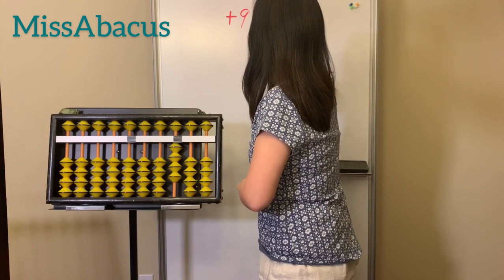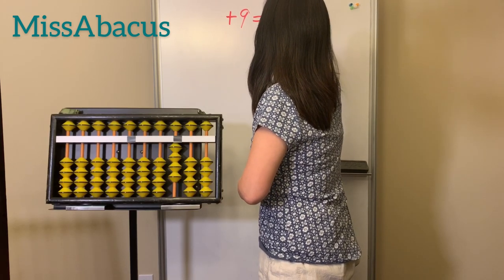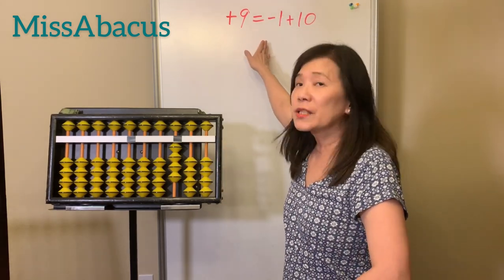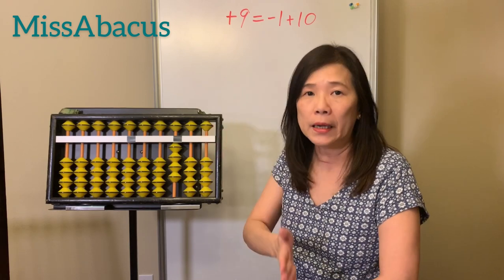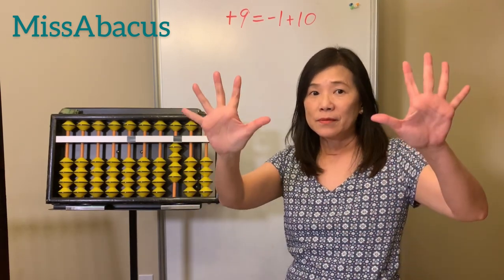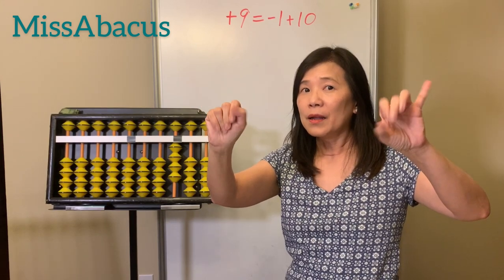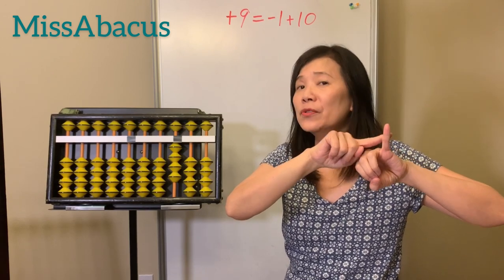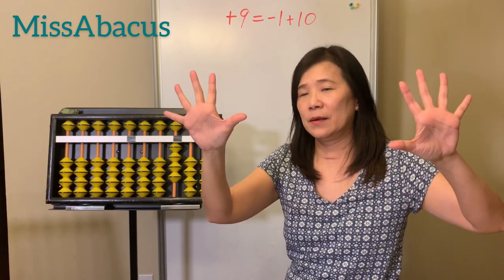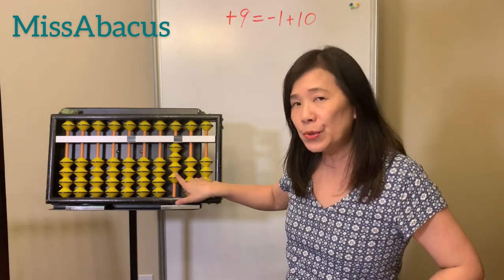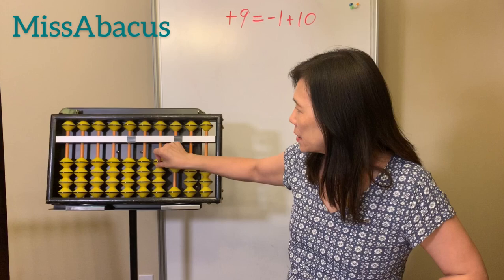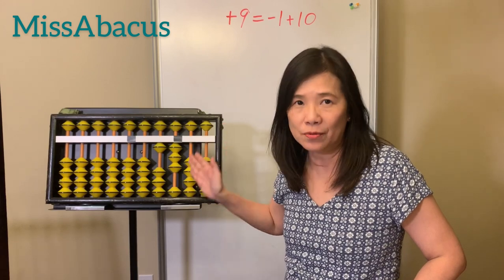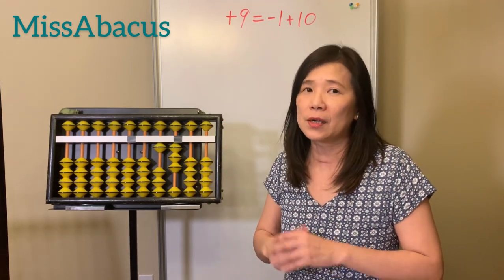For the ninth rule — how to plus nine: you need to take away the complement of nine, then plus ten. Because nine plus ten adds one more, you need to take away one. So for plus nine, the rule is: minus one, plus ten. That's the abacus 10th rule, and that's why you need to know complement numbers very well.